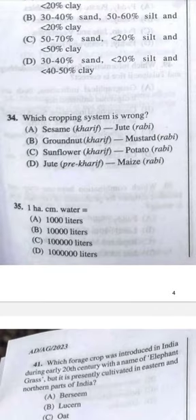Question 35: One hectare-centimeter of water is equal to — answer C, 10⁵ liters.